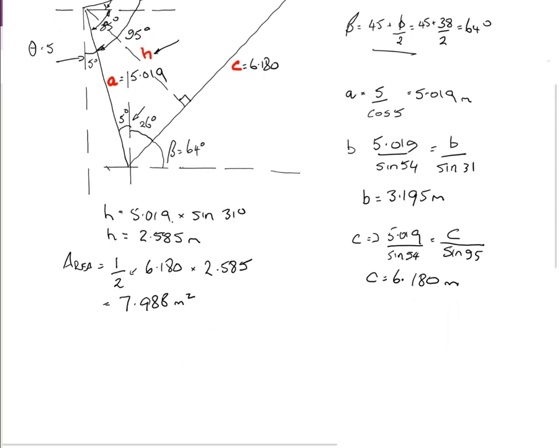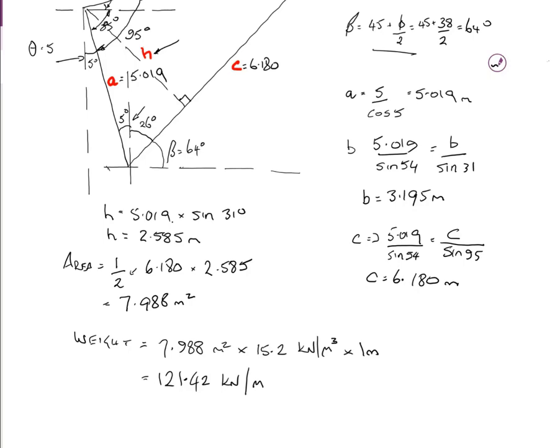The area equals 7.988 square meters. So we now know the area, we need to calculate the weight of it, which is pretty simple. Weight equals the area 7.988 square meters times gamma 15.2 kilonewtons per cubic meter. We're going to do it per meter run of wall, so we multiply it by 1. That comes out to 121.42 kilonewtons per meter run of wall.